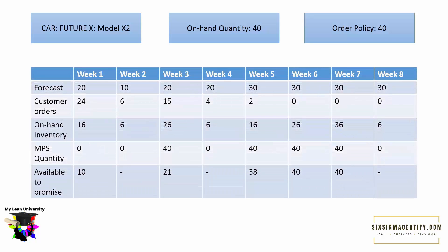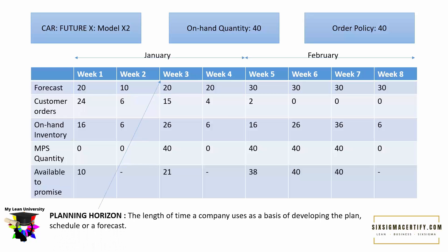This is the Master Production Schedule. There are eight weeks — four for January and four for February. This timeline is called the planning horizon: the length of time a company uses as a basis for developing a plan, schedule, or forecast. Here we use a planning horizon of eight weeks. We also call this a rolling horizon because as production moves forward, week two becomes week one, week three becomes week one after two weeks, and so on — the planning horizon keeps rolling.